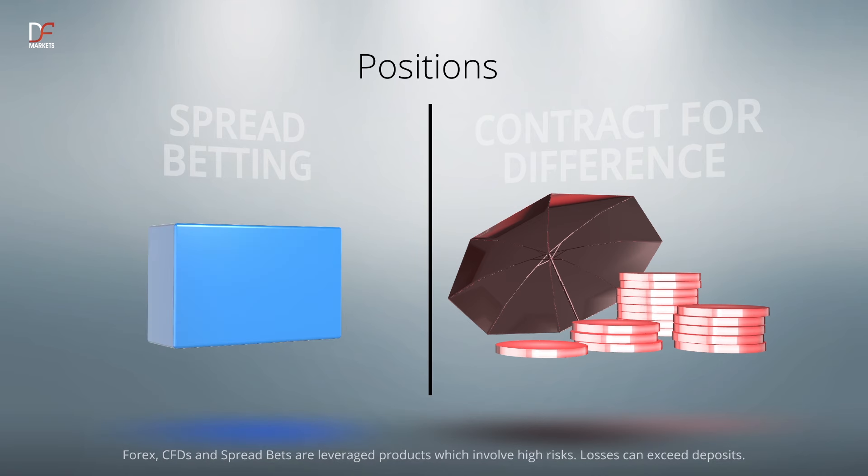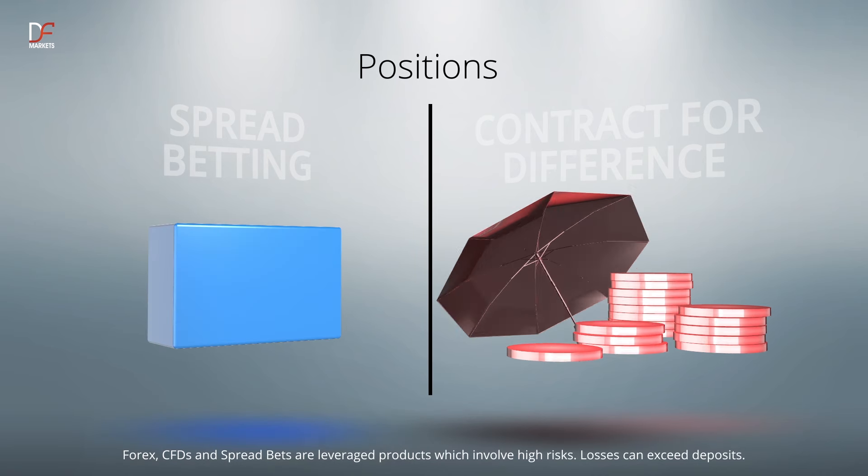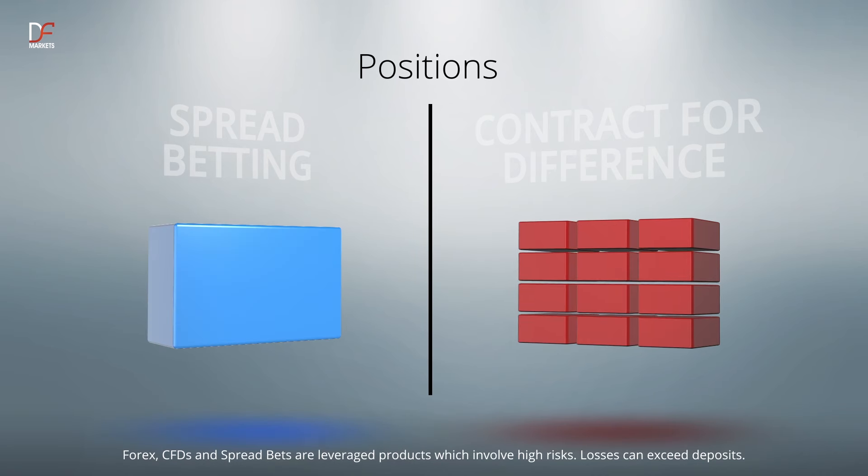When spread betting, the size of your position can be up to 10,000 units depending on the instrument you choose to bet on. When trading CFDs, you can open a position as small as 1 CFD, which means CFD trading is much more suitable for those who prefer smaller positions.